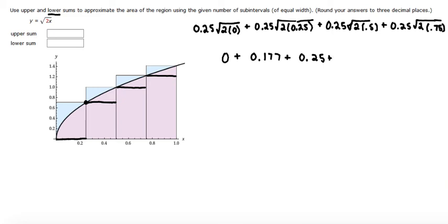For the fourth term, the square root of 1.5 is 1.225, and then times 0.25 is 0.306.